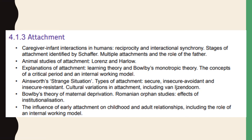I'm going to show you how to use this by taking a look at attachment as an exemplar. I've clicked on attachment and it's brought me to the specification for attachment. For the first bullet point — although it's one bullet point — it's actually hiding about three 16 markers. We've got a potential 16 marker on caregiver-infant interactions in humans, that's reciprocity and interactional synchrony. Then we've got the stages of attachment as identified by Schaffer — that could also be one, because that's a big piece of research on the Glasgow babies. And then we've got multiple attachments and the role of the father. So from that first bullet point, you can see we've got three potential 16 markers.